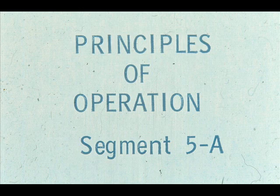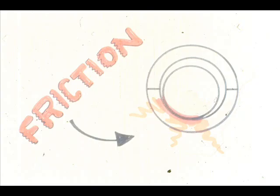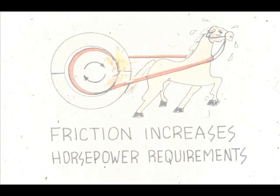During this segment of our course on sleeve bearings, we will explain the principles of operation of the two basic types: split and solid sleeve. As the surface of the shaft slides over the surface of the bearing, friction is generated. The friction creates heat, which increases the load on the driver, requiring more horsepower to turn the shaft, along with other undesirable side effects.